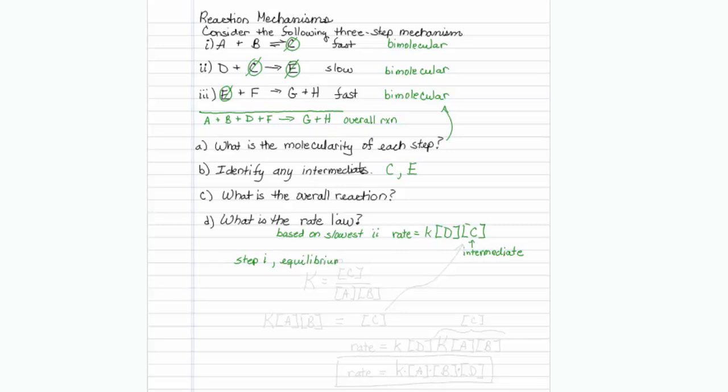So I can write that K, the equilibrium constant, must be equal to C divided by A times B.